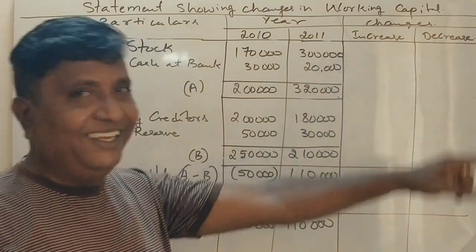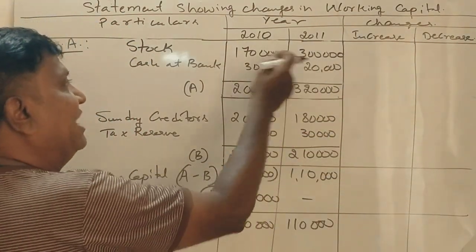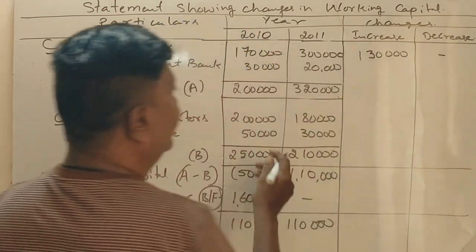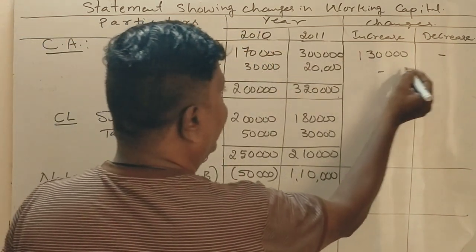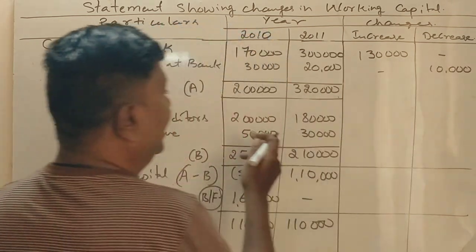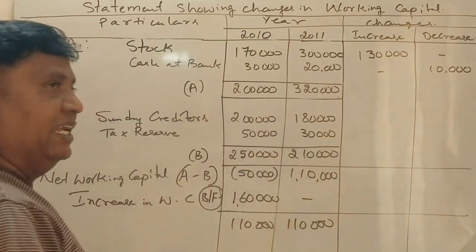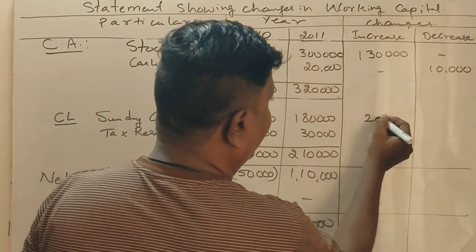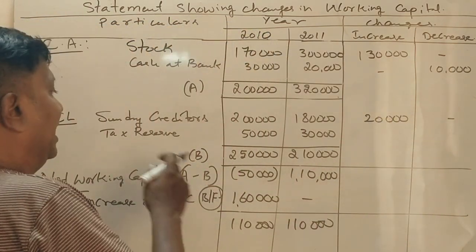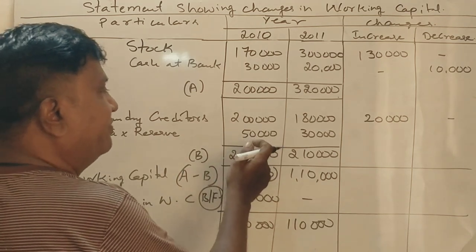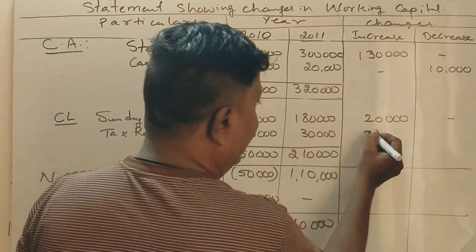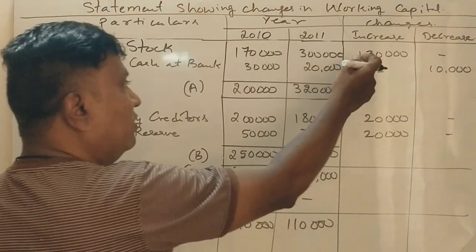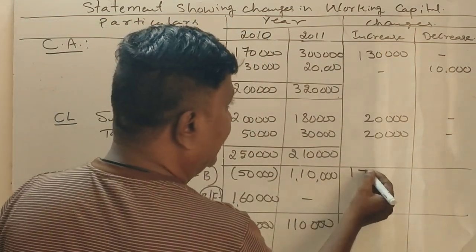In the decrease column: 3,00,000 minus 1,70,000 equals 1,30,000 increase for stock. Cash at bank: 30 minus 20 equals 10,000 decrease. Sundry creditors: 2,00,000 minus 1,80,000 — current liability decrease means working capital increase. Tax provision: 50,000 minus 30,000 decrease. Increase column total: 1,50,000 and 1,70,000.